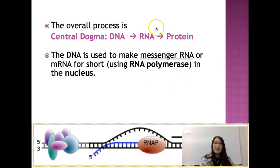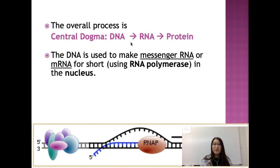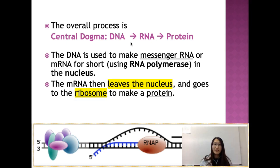That's why we call this particular RNA within this sequence of events — DNA, RNA, protein — we call it mRNA: messenger RNA. The process of making DNA into RNA is done by a protein called RNA polymerase. RNA polymerase makes RNA, and DNA polymerase does DNA replication. This process — DNA to RNA — happens in the nucleus because DNA cannot leave the nucleus.